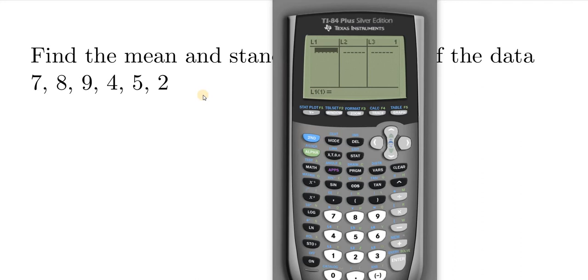So we have 7, 8, 9, 4, 5, 2. So 7 enter, 8 enter, 9 enter, 4 enter, 5 enter, and then 2 enter. So type it all in.